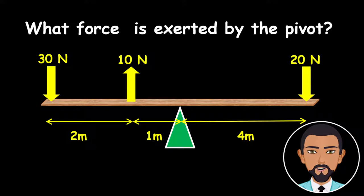The question reads, what force is exerted by the pivot? Now this question is based upon the system shown below. The system can be considered to be in equilibrium or balance.